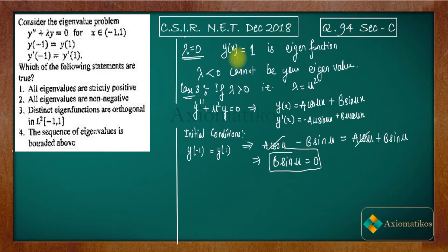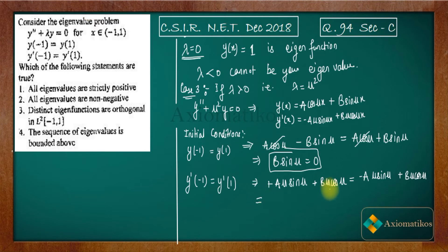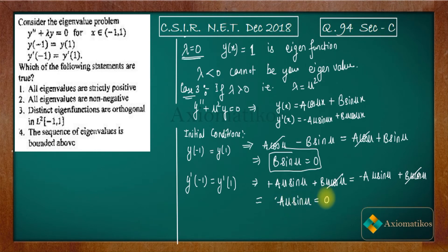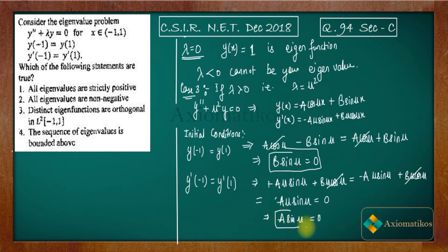Applying the second boundary condition similarly, the b·μ·cos(μ) terms cancel, leaving 2a·μ·sin(μ) = 0, which means a·μ·sin(μ) = 0. Since μ ≠ 0 (the eigenvalue is positive and hence non-zero), we conclude a·sin(μ) = 0.